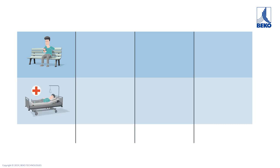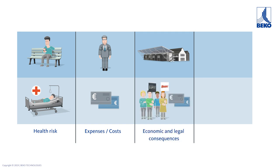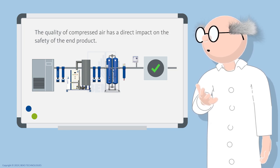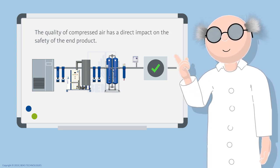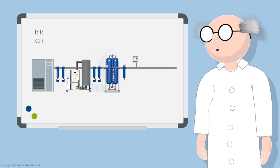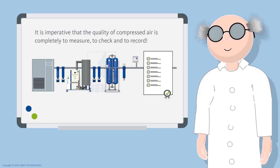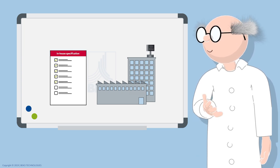Contaminated foods could pose a health risk for the consumer. In addition, sellers and manufacturers may incur considerable costs and legal consequences. Depending on the contamination and the speed of the industry's reaction, a significant loss of image and negative consequences for a large part of the food industry can be expected. To sum up: the quality of compressed air has a direct impact on the safety of the end product, and it is essential to measure, check, and record the compressed air quality completely, based on applicable standards and the manufacturer's in-house specifications.